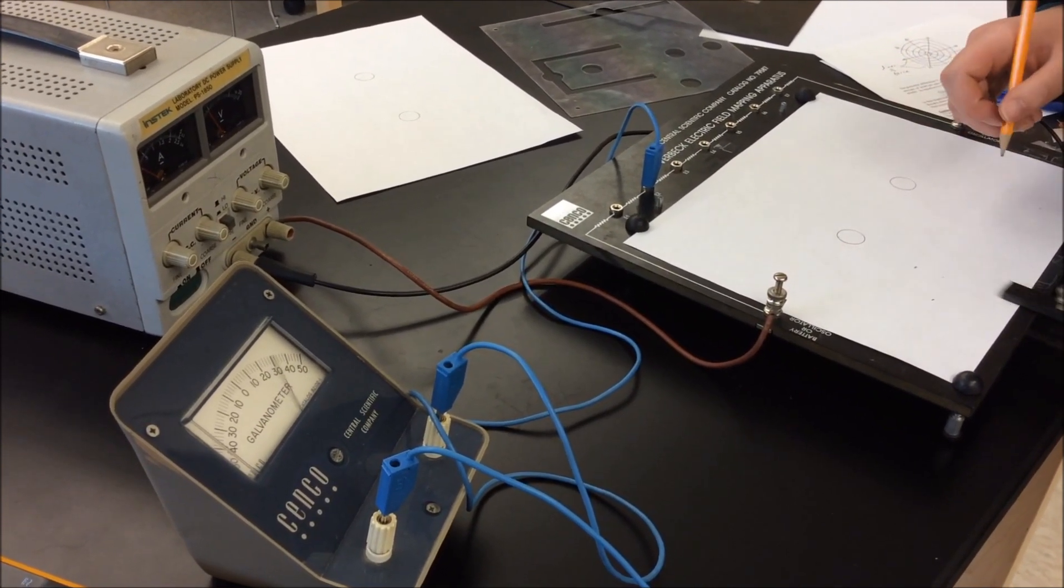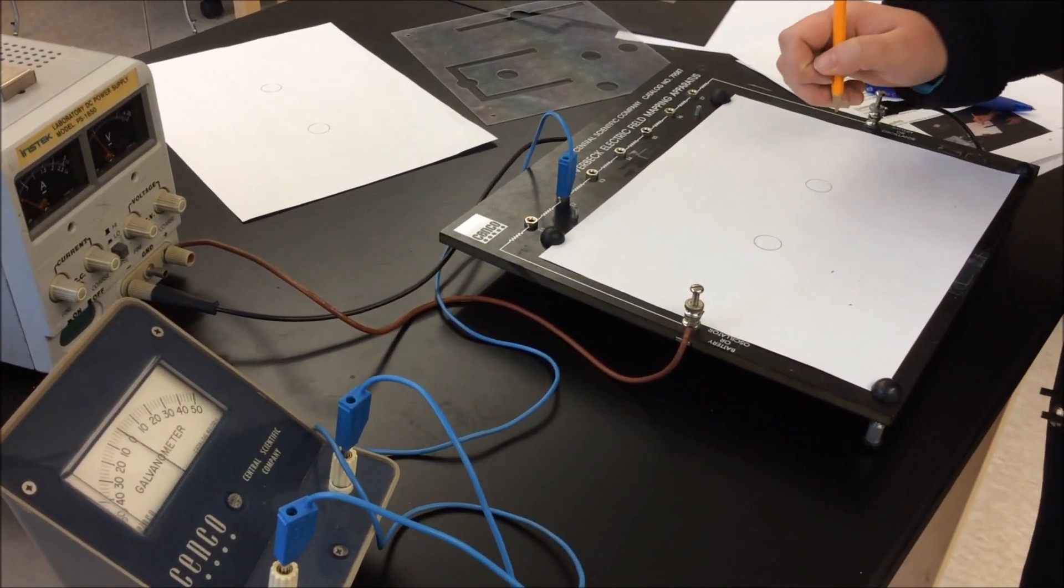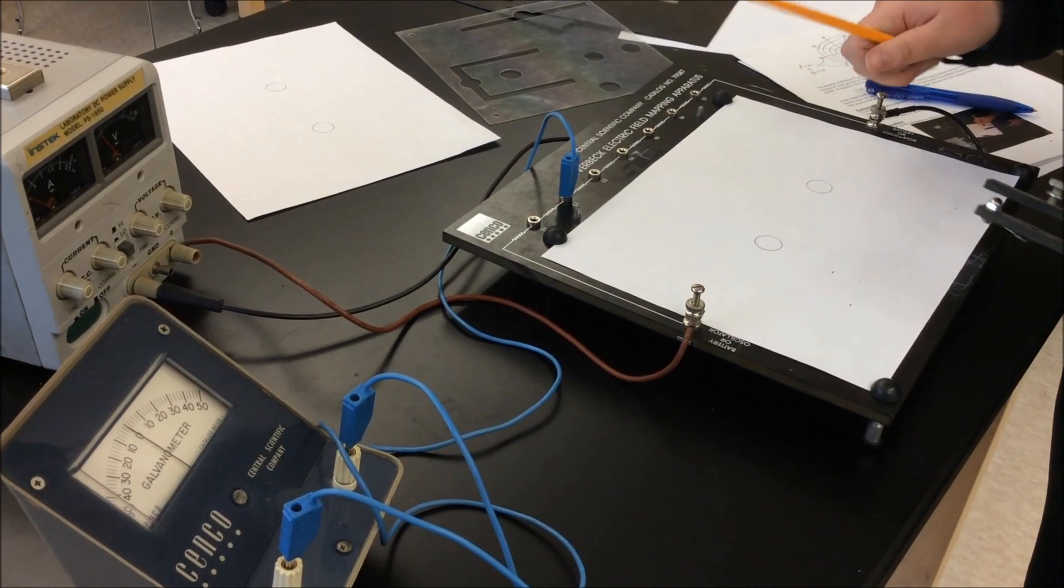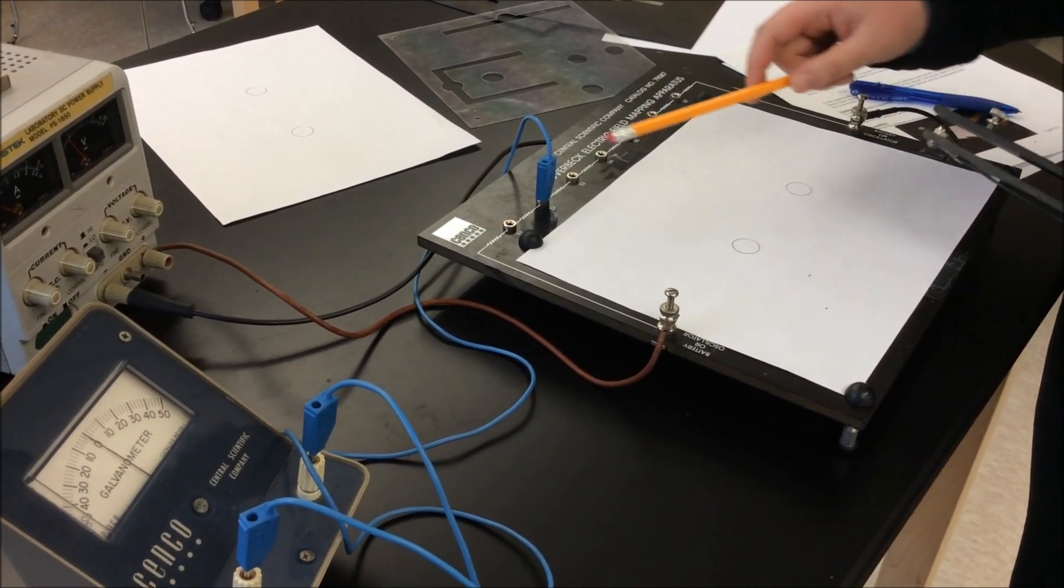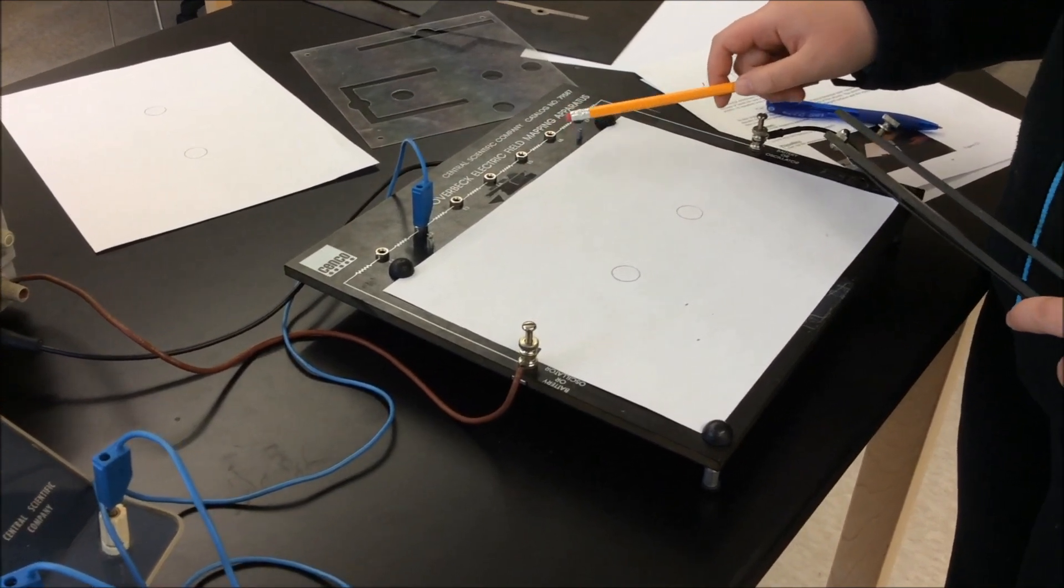And then once you do that, you're going to draw a line. After you do that, you're going to repeat all the steps when the wire is on E3, E4, E5, and E6.